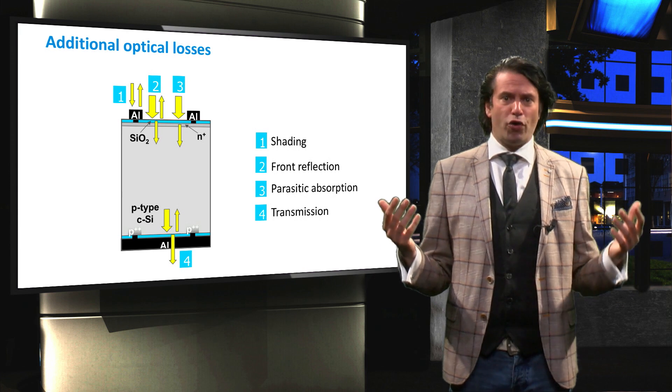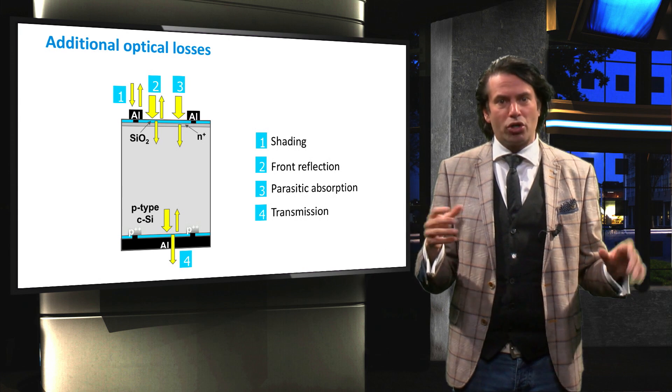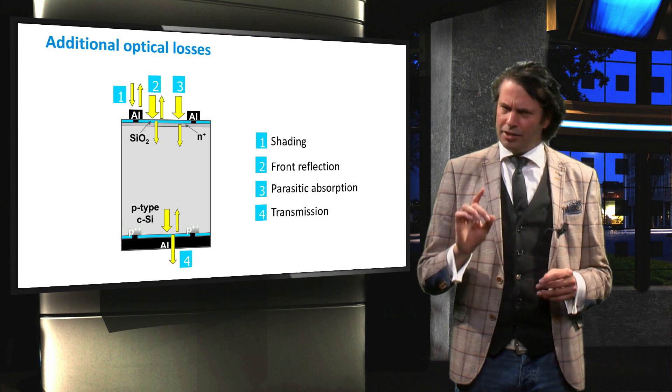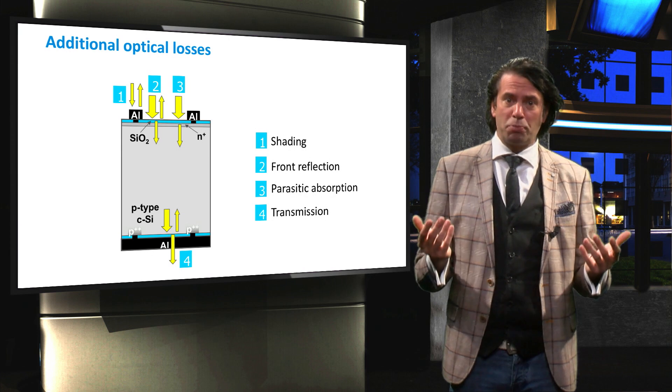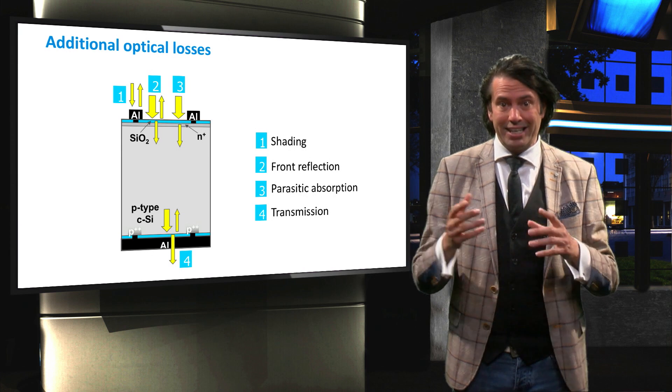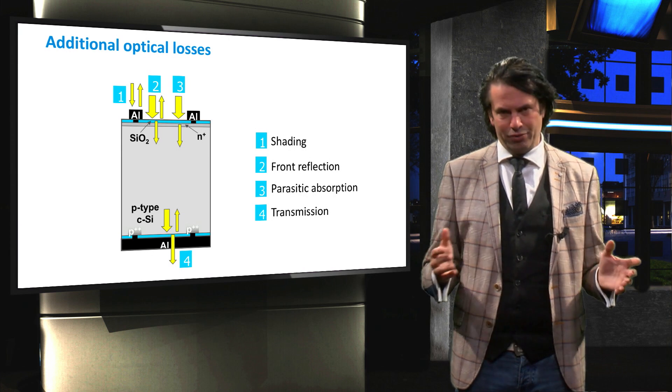This generally involves photons with energy equal to or slightly above the bandgap energy. These photons have a lower absorption probability and are therefore less likely to be absorbed in the solar cell.